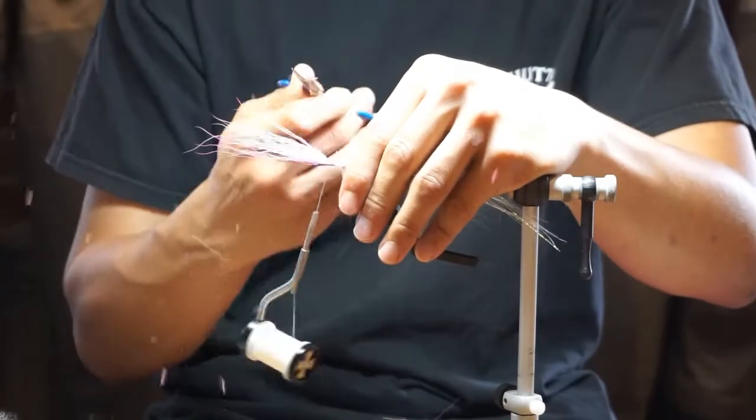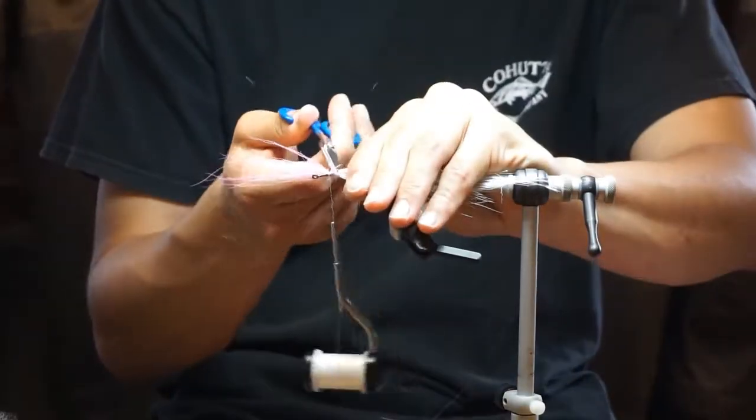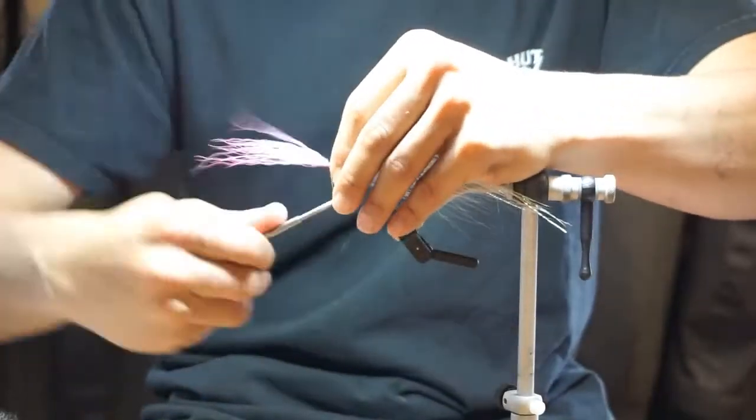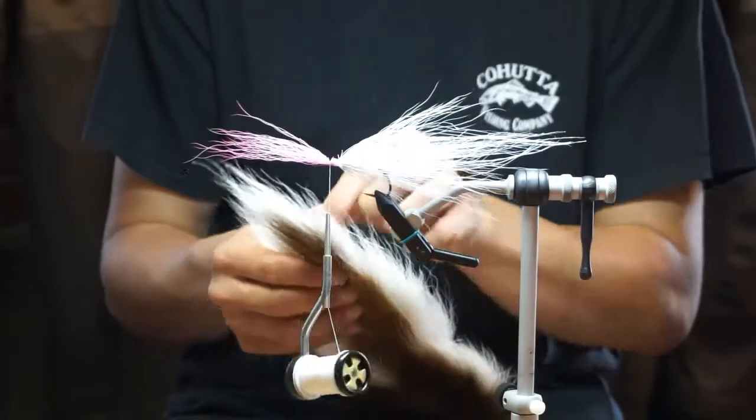And then you do the same thing on the bottom. That gives a little bit of rotation there. It covers the shank. You've still got a 3D profile. It's not flat like a deceiver. But it stands straight up. I'm going to do that on both parts of it.